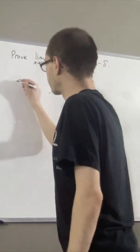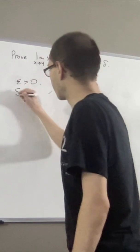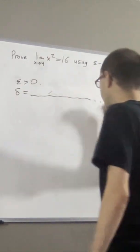So to do this, we first give ourselves an arbitrary epsilon greater than 0, and from here we want to figure out what we should choose delta to be.